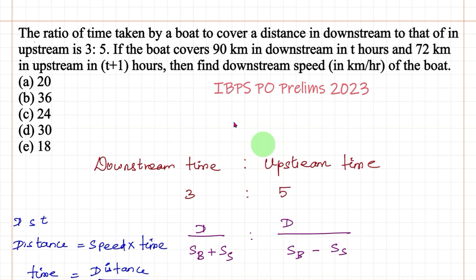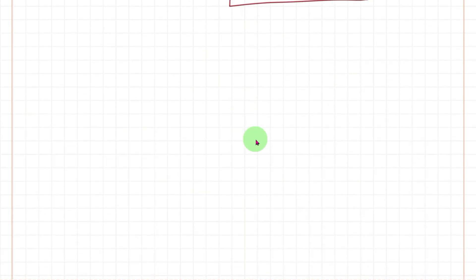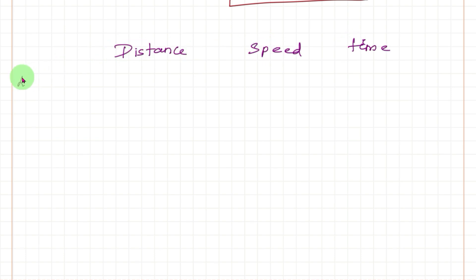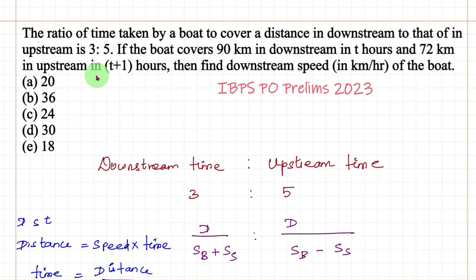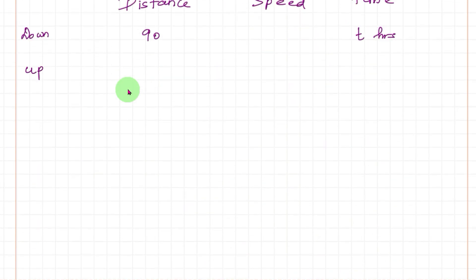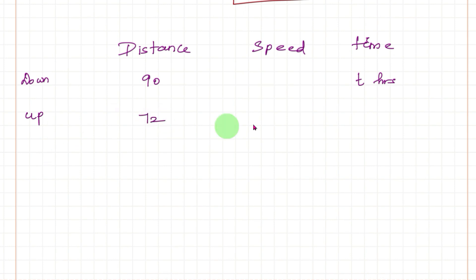Now from the second set of data: the boat covers 90 km in downstream in T hours, and 72 km in upstream in T plus 1 hours. Using the same DST formula, we can find expressions for downstream speed and upstream speed in terms of T.